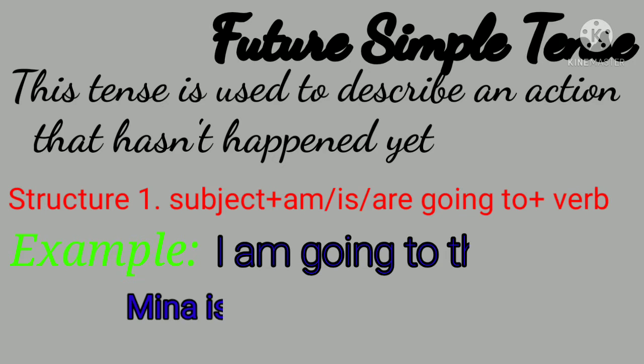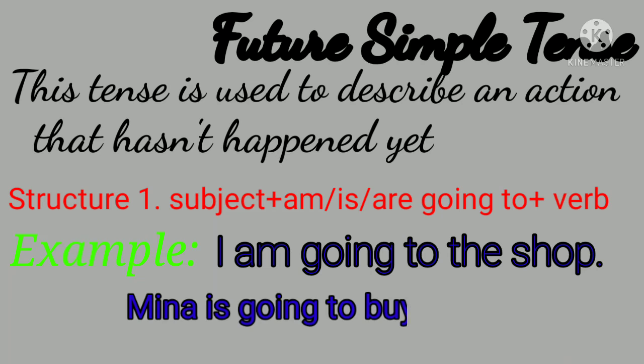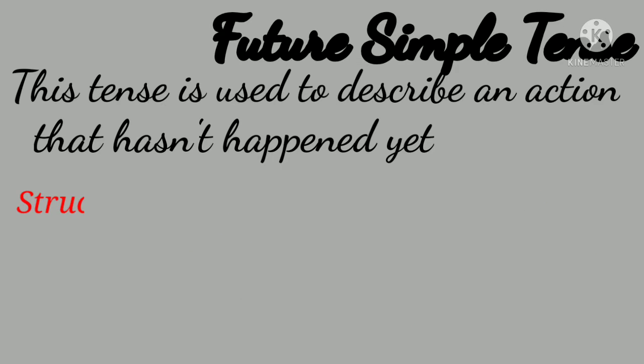Structure 1: Subject plus am/is/are going to plus verb. Example: I am going to the shop. Mina is going to buy flowers.